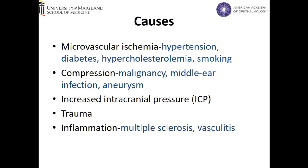Causes of cranial nerve 6 palsy include the following. Poor blood supply caused by a combination of factors such as high blood pressure, diabetes, raised cholesterol, and smoking — this is referred to as a microvascular palsy. Direct pressure caused by tumors, middle ear infections, or swelling of neighboring blood vessels can also damage the 6th nerve.